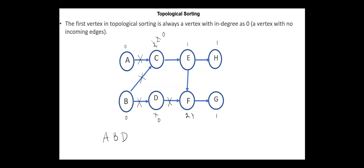Now in the remaining graph, we have C with in-degree equals to zero. We delete all the edges outgoing from C, and we update the in-degree of E to zero. In the remaining graph, next we select E, we delete all the edges outgoing from E, and we update the in-degrees for H to zero, and for F to zero as well. Next we can pick F, and delete the edge outgoing from F, and update the in-degree for G to zero. We have two remaining vertices with in-degrees equal to zero. So this is one of the topological sortings for the given graph. As you can note here, we can obtain other topological orderings.